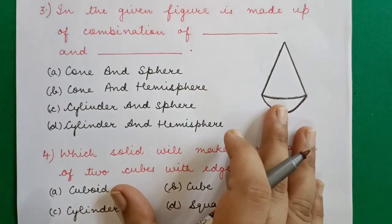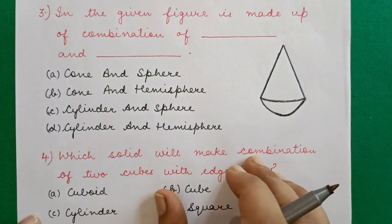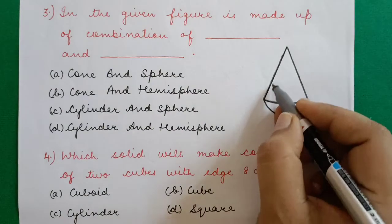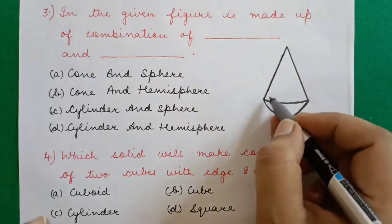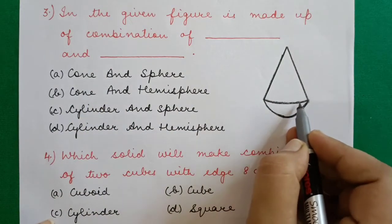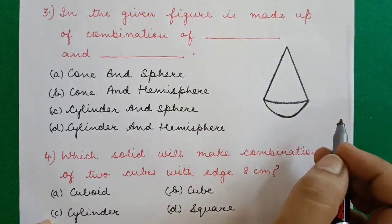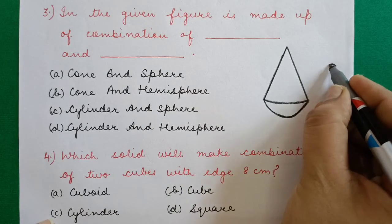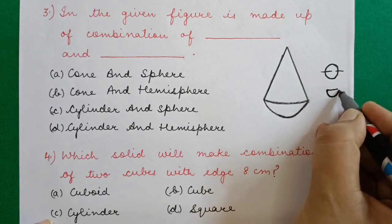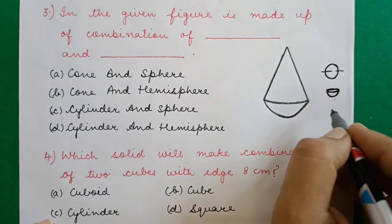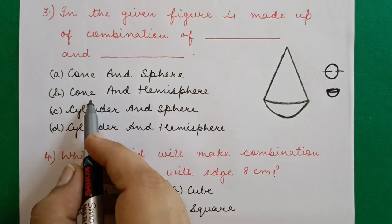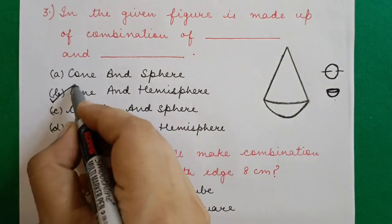Question 3: In the given figure, which combination of two solids is shown? Looking at the figure — the top part is a cone and the bottom part is a bowl-shaped figure. A sphere cut in half gives a hemisphere. So the bottom portion is a hemisphere. Therefore the answer is option B: this is a combination of a cone and a hemisphere.